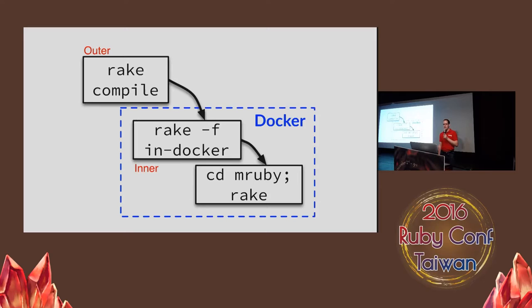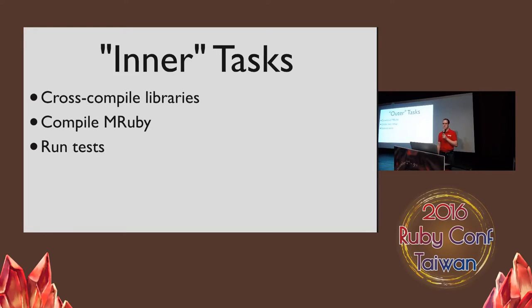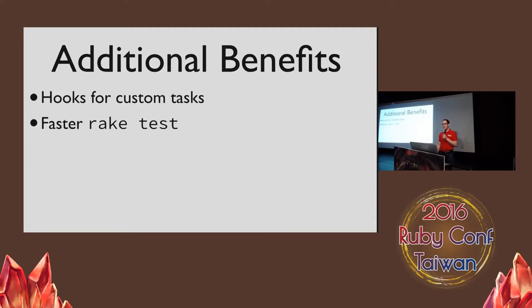The new system runs rake three times. First, the outer tasks run and start Docker, which runs the inner tasks. The inner tasks perform any cross-compilation and any other setup that can only occur inside of Docker, and then run mruby's rake tasks to build the command line tool. The outer tasks don't need Docker — I use them to download and unpack mruby to get it ready to compile, and there's also some global test setup. Finally, there are release tasks for publishing your finished executable. The inner tasks run inside of Docker, cross-compile the C libraries you have configured, then invoke rake again to compile mruby or run the tests. This also makes rake tests faster by only compiling for the host platform when running tests — there's no need to build for every platform when you can only run tests for the host.